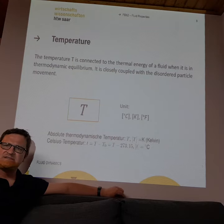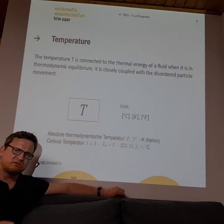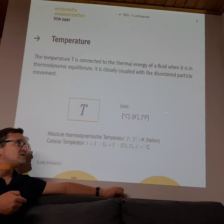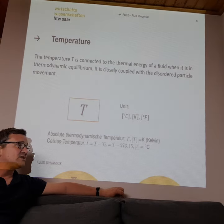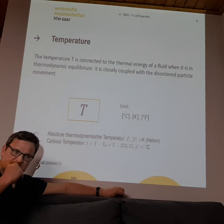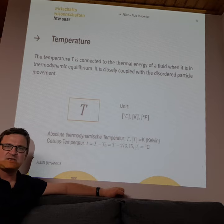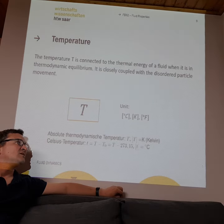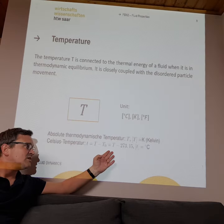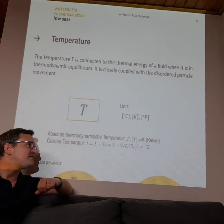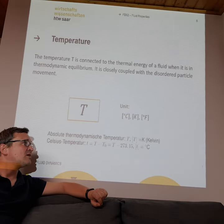The most important state variable — and I think you know it from school — is temperature. We can measure temperature in degrees Celsius, in Kelvin, or in Fahrenheit, and there are even more units for temperature. In physics, you all need to know how to convert from degrees Celsius to Kelvin.